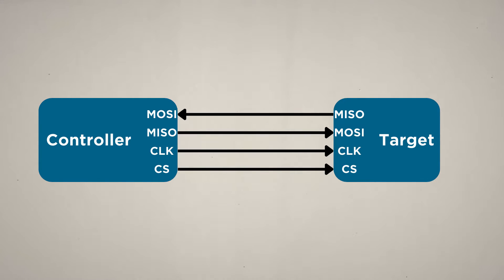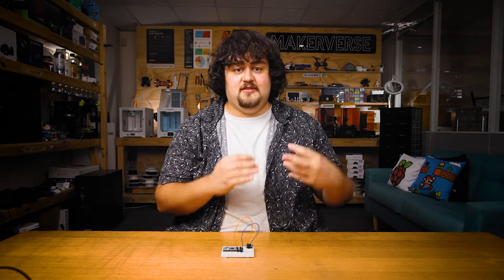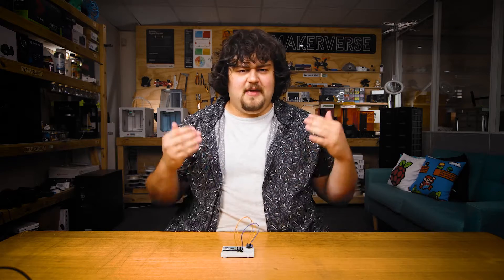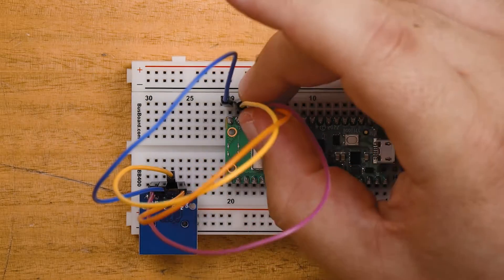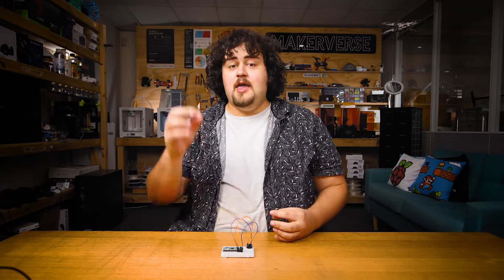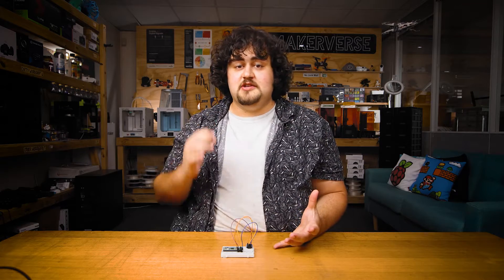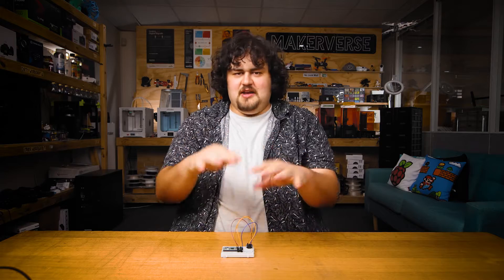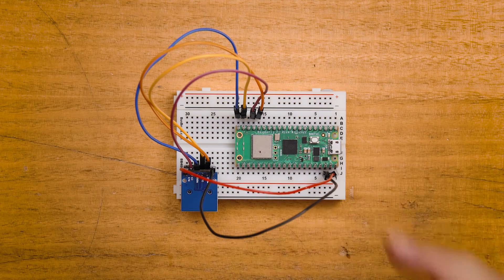The last pin is the chip select pin, and it's used by the controller to select which target device it's talking to. If we had multiple target devices all connected by the same wires, how would they know which one was meant to receive a given message? This is where chip select comes in — we connect the CS pin of our card reader to pin 13 of the Pico. When the Pico sends or receives data, it uses a digital output on pin 13 to tell the SD card it's the intended recipient. As always, we also need to give the module power — this is a 5V device, so I'll power it off VBUS.